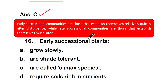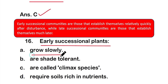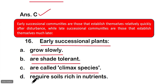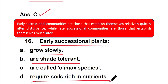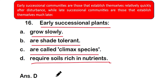Question number sixteen: Early successional plants — option A: grow slowly; option B: are shade tolerant; option C: are called climax species; or option D: require soils rich in nutrients. The right answer is option D — early successional plants require soil rich in nutrients.